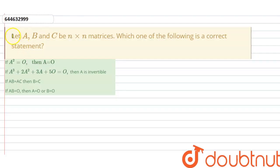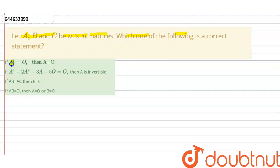Hello. The given question says that let A, B, C be N×N matrices. Which of the following is the correct statement? Statement A: if A² equals the null matrix, then A equals the null matrix.